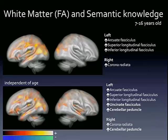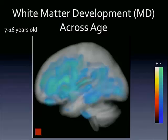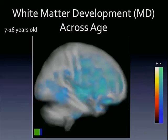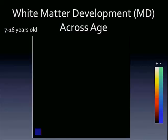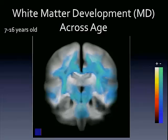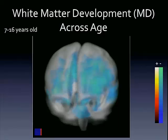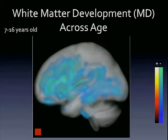Once controlling for age, some of these correlations become even stronger — they kind of pop out more. I'll particularly point to the cerebellar peduncle, right and left, and the connections extend further in the temporal lobe down to those temporal poles. Here is mean diffusivity and the negative correlations across development in this sample — we see a lot of decreases in mean diffusivity, which is expected, representing increased myelination, and this is just across age in this school-age sample. But when we look at the relationship between diffusivity and the semantic knowledge factor, there were no significant correlations.